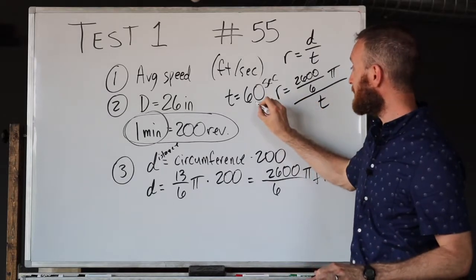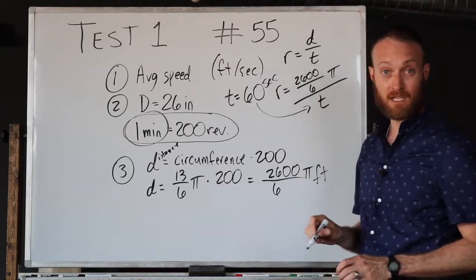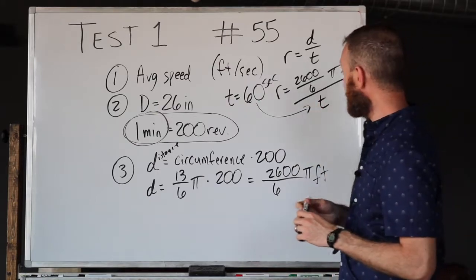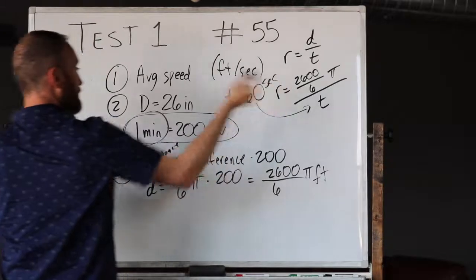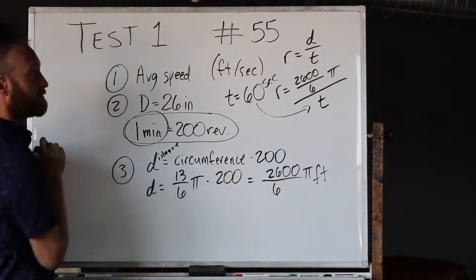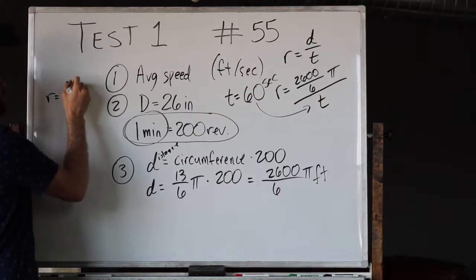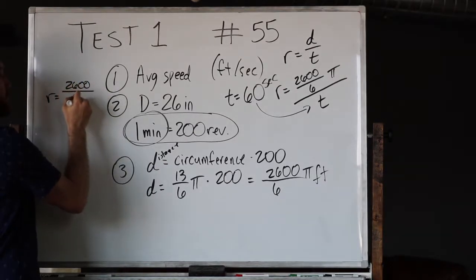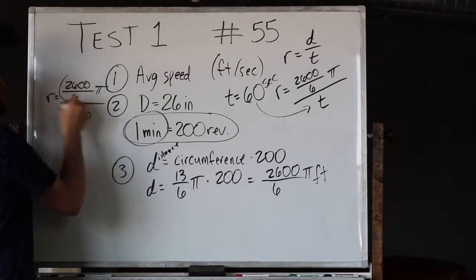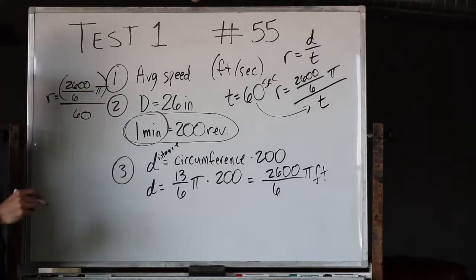Now we get to, in the simplest way possible, take this, plug it in for t. I'm going to come over here and rewrite this whole thing, so we actually have the rate is equal to 2600/6 π divided by 60.